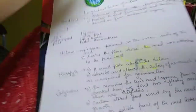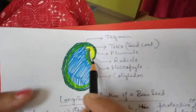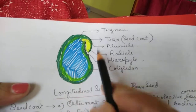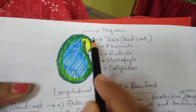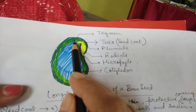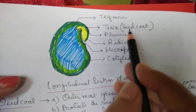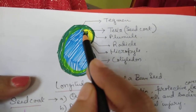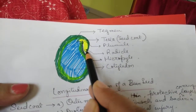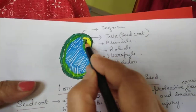In a longitudinal section of the bean seed, the outer covering is the testa. Below it is another covering called the tegmen; these two together constitute the seed coat. The light yellow colored part is visible — the upper part is the plumule and the lower part is the radicle.